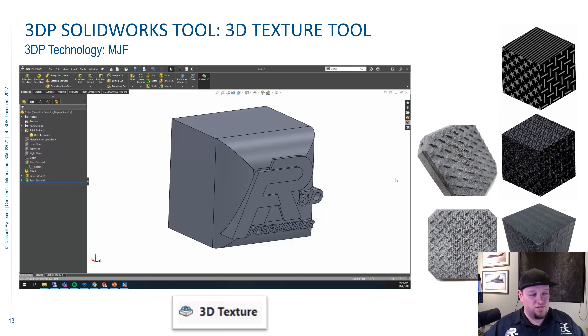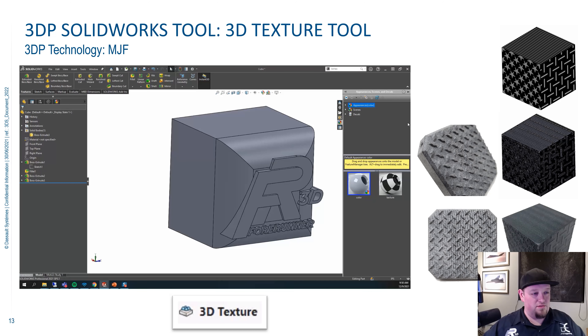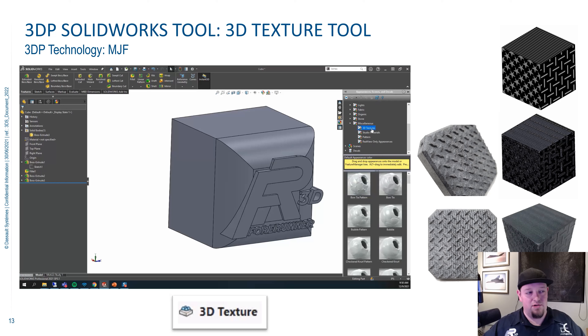This is really cool. You can see on the side here some of the parts we've done with it. First thing you do is hit that little color wheel on the right-hand side, navigate down to miscellaneous and then 3D textures.